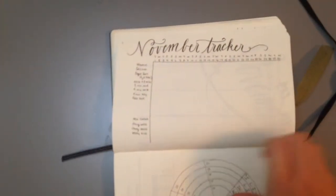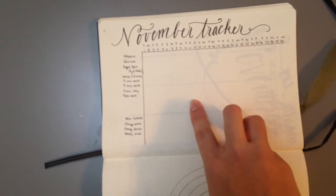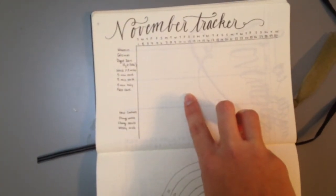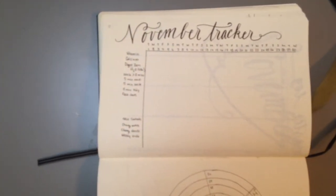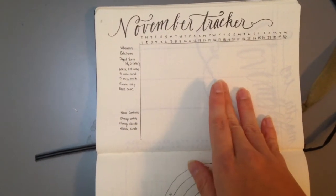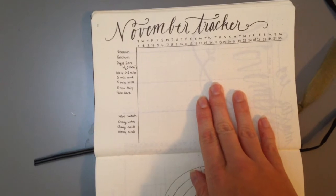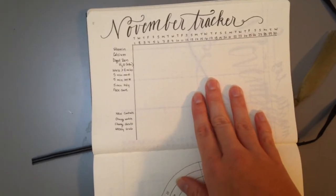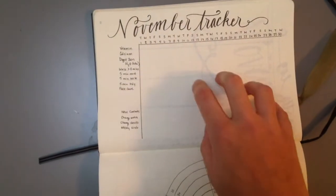Here, as usual, we have the November tracker. I removed a few things that I just wasn't doing. There are also some things that I didn't do at all in October, but I still want to do, so they're on here.